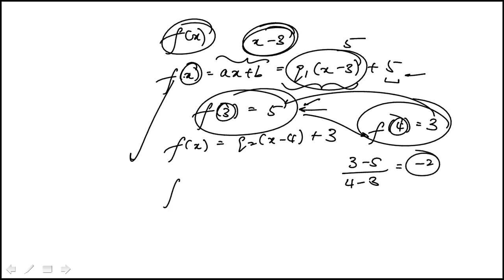Which means the form is minus 2x plus b. Now I have a value, I can use either one. f of 4, meaning if I replace x with 4, equals 3. If you solve this, you get b equals 11.